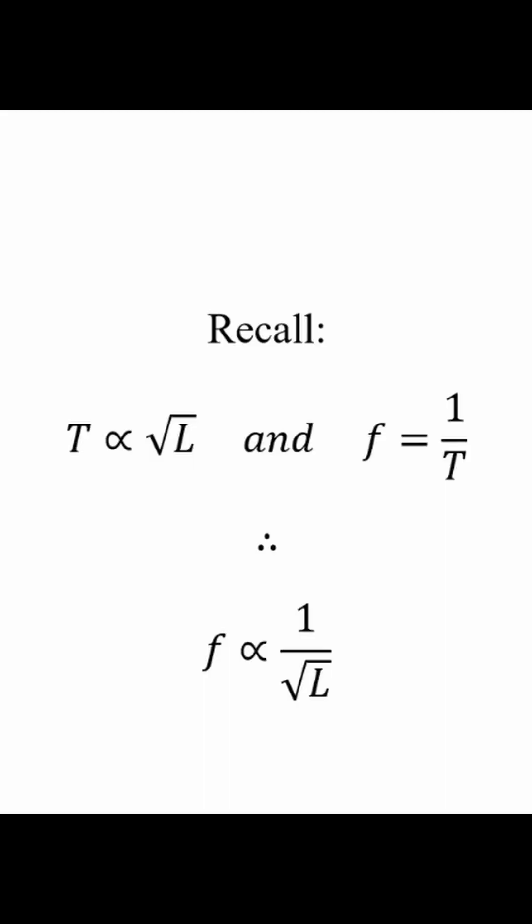Recall that the period is proportional to the radical length and frequency is equal to the inverse of period. Therefore, frequency must be proportional to the inverse of the radical length.